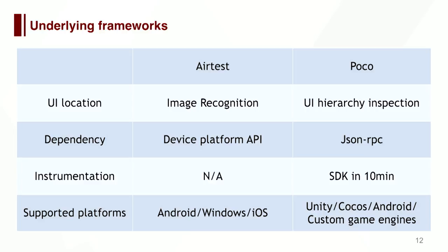Here is a comparison. AirTest uses image recognition to locate UI and uses platform API to perform simulated input. What's great is it does not require any instrumentation — just plug in your phone and start using. We support multiple platforms. POCO uses UI hierarchy inspection and JSON RPC to communicate with the SDK in the game engine. You need to integrate our SDK, which usually takes less than 10 minutes. We now support Unity, Cocos, and Android native apps.